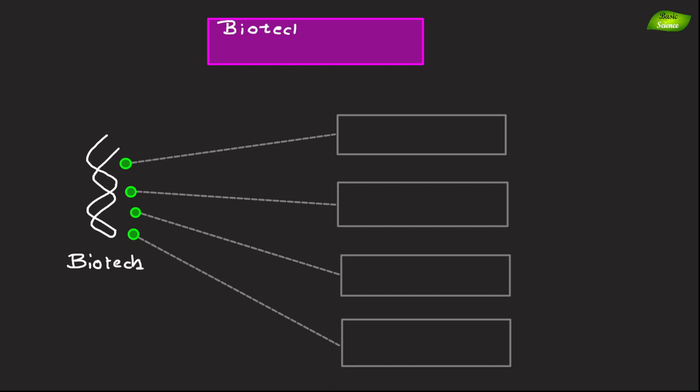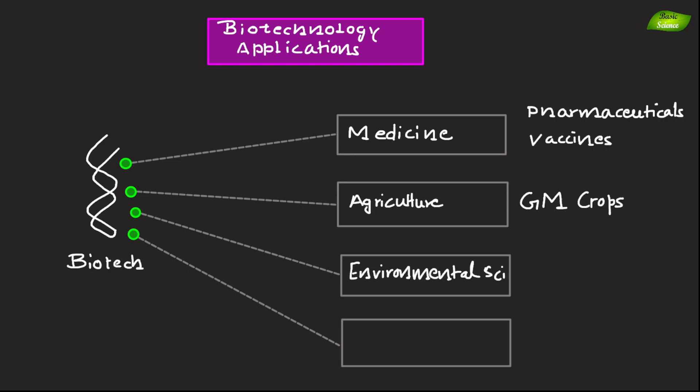Biotechnology applications in medicine include pharmaceuticals and vaccines. In agriculture, it includes production of genetically modified crops. In environmental sciences, it includes bioremediation, and in industrial processes, it includes biofuel production.